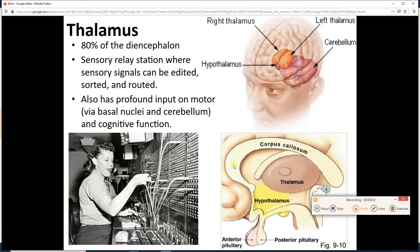First up, the thalamus looks kind of like a pair of eggs right here in this guy's skull. It's the biggest part, so 80 percent, four-fifths of the diencephalon. It is a relay station.